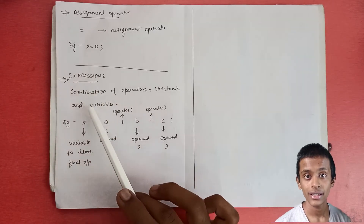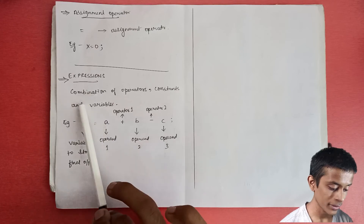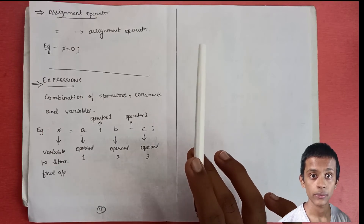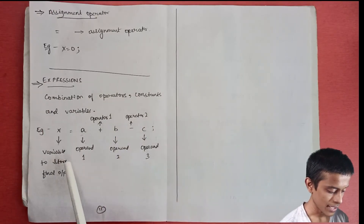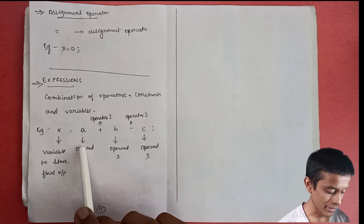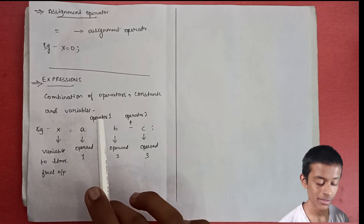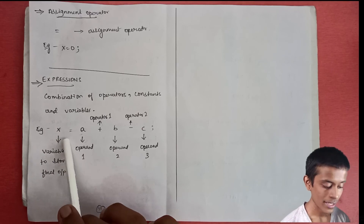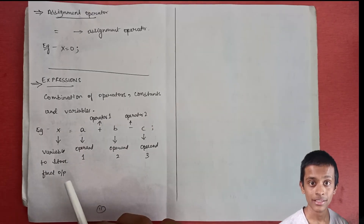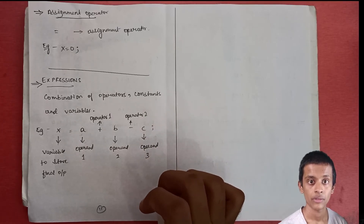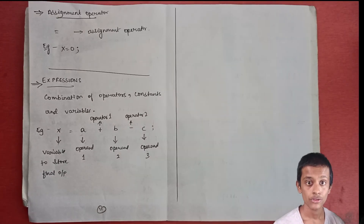Finally, what is an expression? An expression is the combination of operators, constants, and variables that produces a new value. For example, in 'x = a + b - c', a, b, and c are the operands, plus and minus are the operators, and as a whole this is an expression — the variable x stores the final output. This comes to the end of today's session. If you have any doubts, let me know in the comment section. See you in the next one — have a nice day!